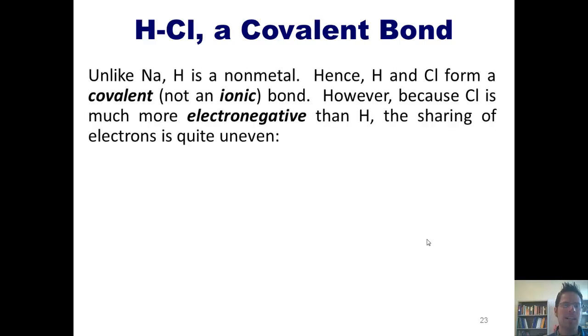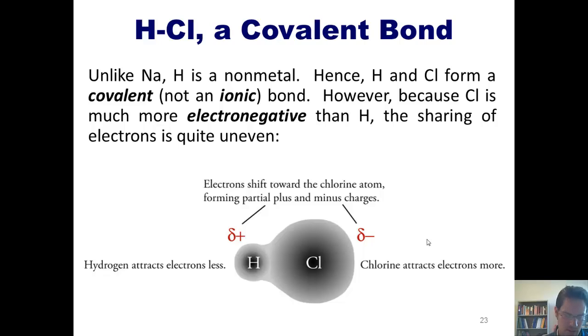Well, unlike sodium, H is a nonmetal. Hence, hydrogen and chlorine form a covalent, not an ionic, bond. However, because chlorine is much more electronegative than hydrogen, the sharing of the electrons is quite uneven. This is illustrated in the following picture, which shows the much more electronegative chlorine atom, mostly hogging the electrons to itself. This results in a partially negative charge on the chlorine and a partial positive charge on the hydrogen. Nevertheless, the formation of this molecule and sharing of each other's electrons allows each of these two atoms to feel like the noble gases that they're closest to. As you can see, no distinct ions are formed.